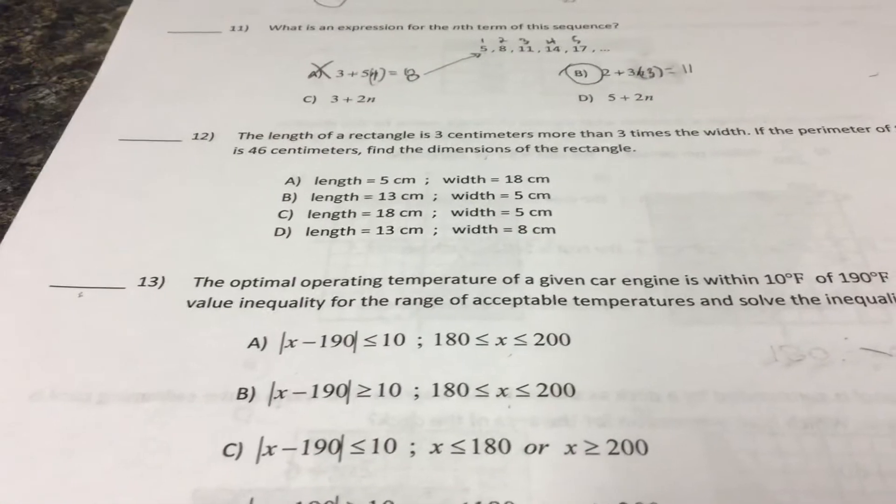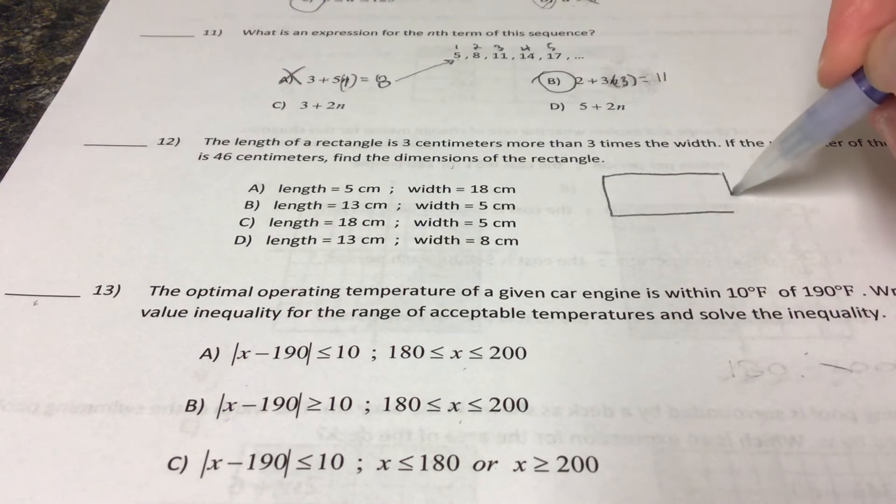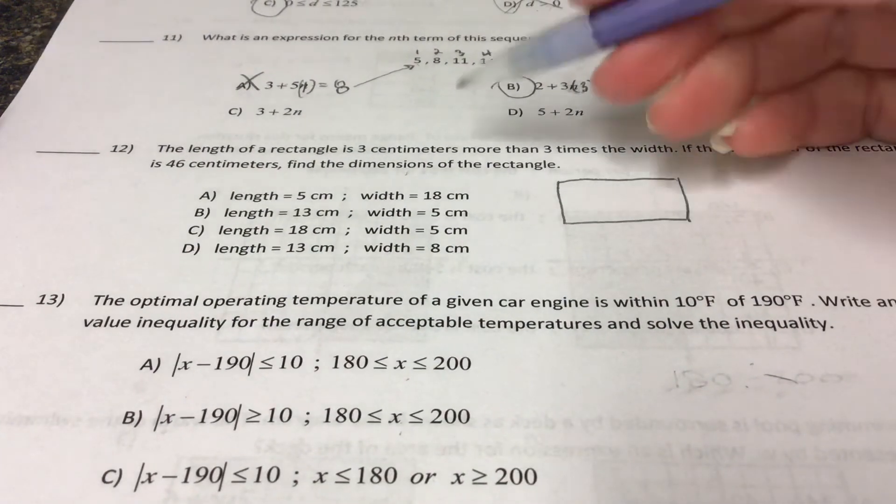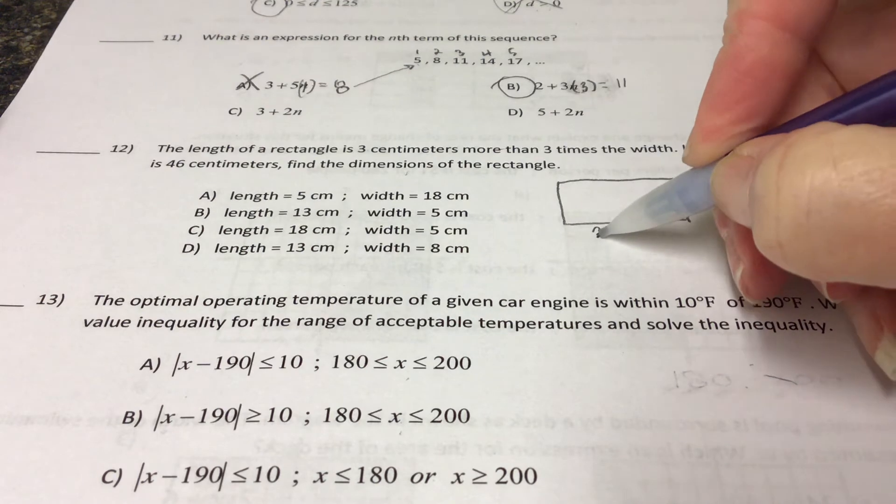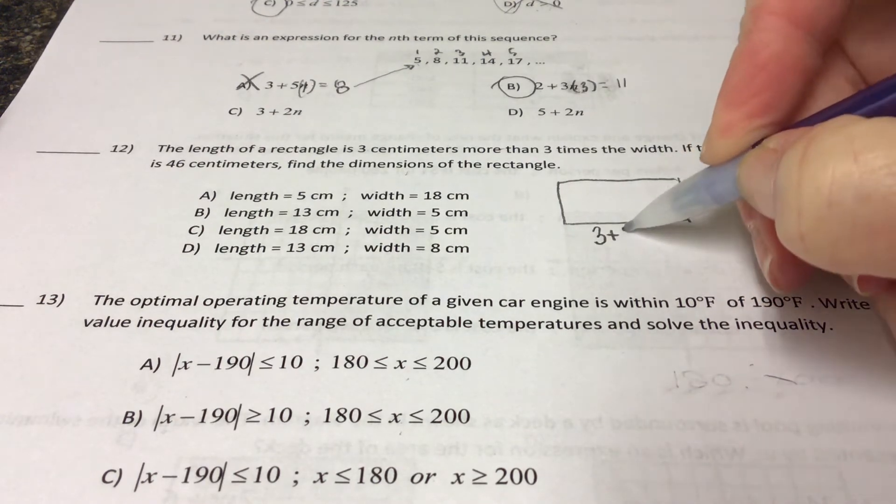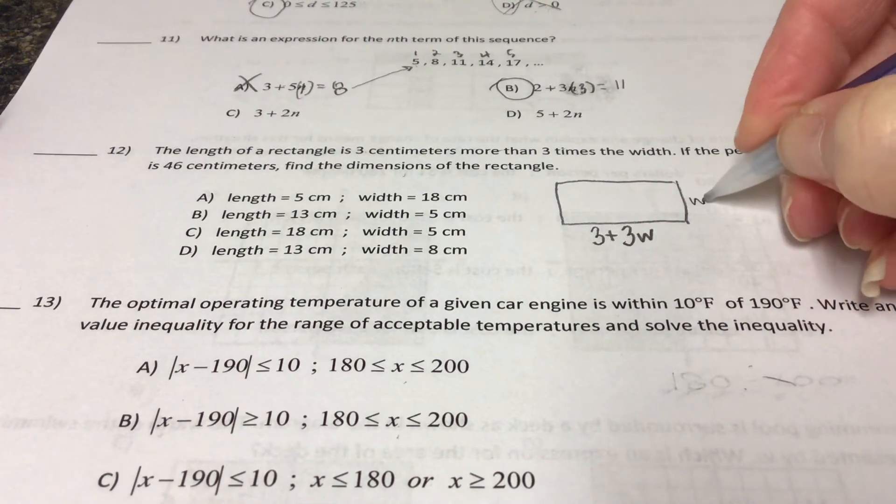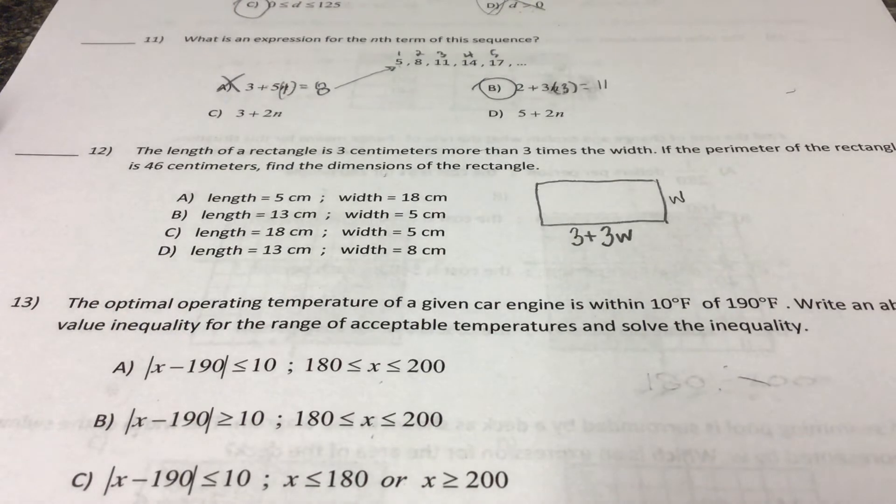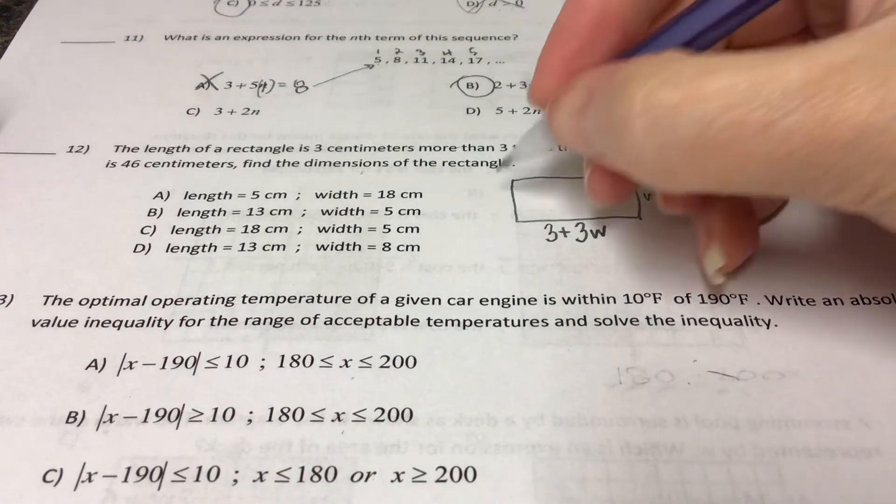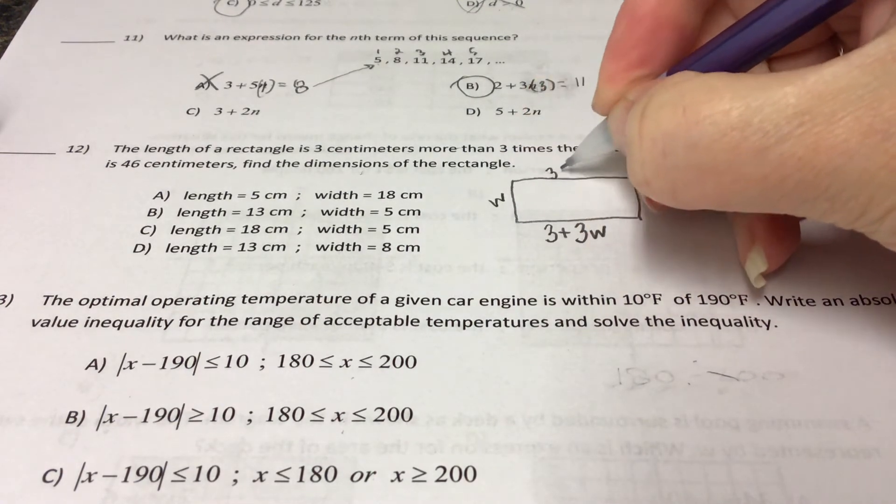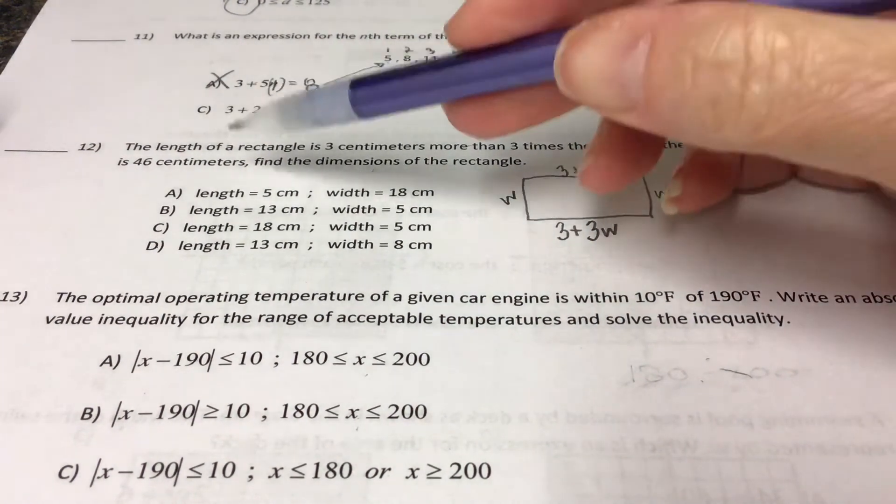So our next question, number twelve, says the length of a rectangle. Please draw a picture. Is three centimeters more than three times the width. Three centimeters more than three times the width. And we don't know what the width is. It says if the perimeter is forty-six. You've got to know what the word perimeter means. Perimeter means the distance around.